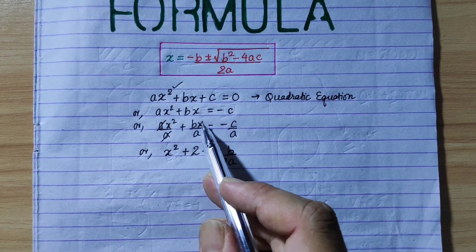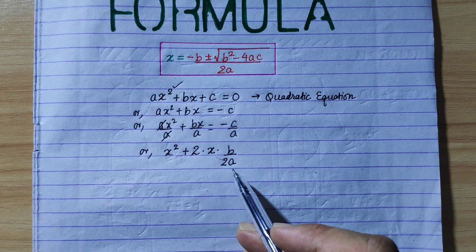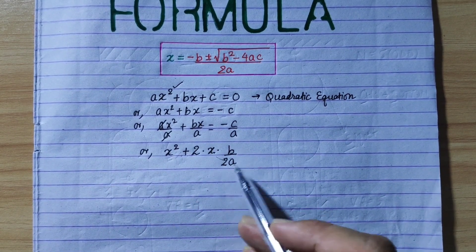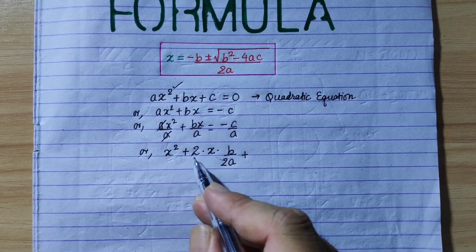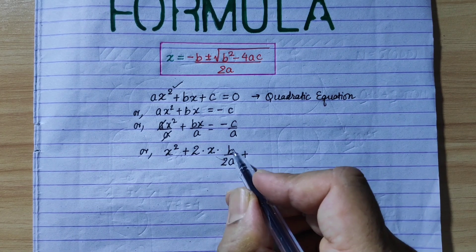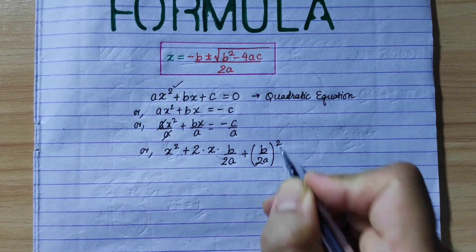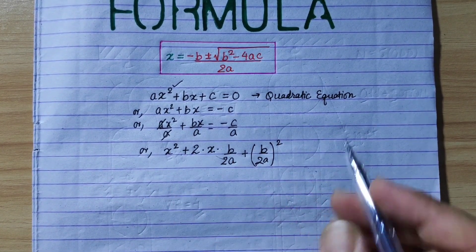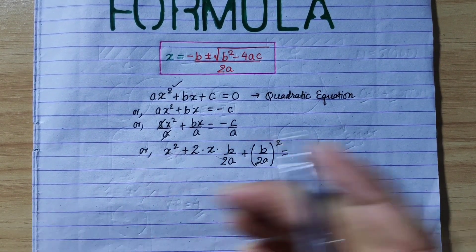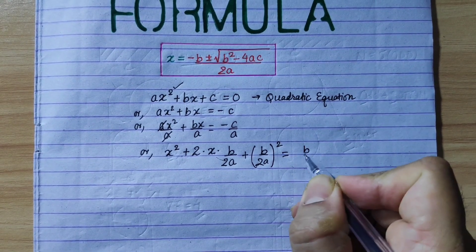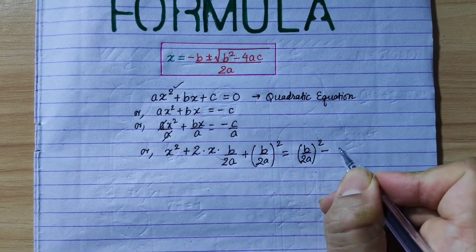We have to get the answer. So we have to divide the answer. x is equal to b upon a. So we have b upon 2a. So we have a square plus 2ab plus b upon 2a. So we have to balance this with a square plus b upon 2a.